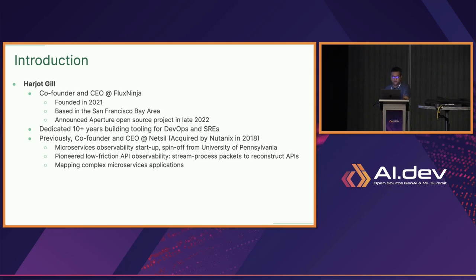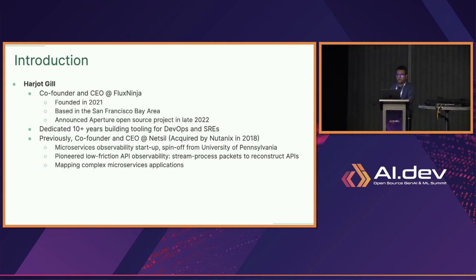A little background about myself: I am co-founder and CEO of a startup called Flux Ninja, which is based off an open source project called Aperture — that's what we'll be covering today. I've dedicated more than a decade of my life building tools for DevOps and SREs. My last startup was acquired by Nutanix in 2018, focused on observability and cloud-native applications.